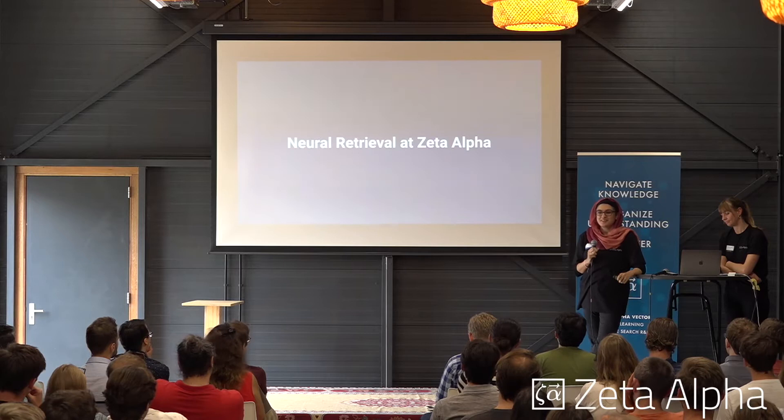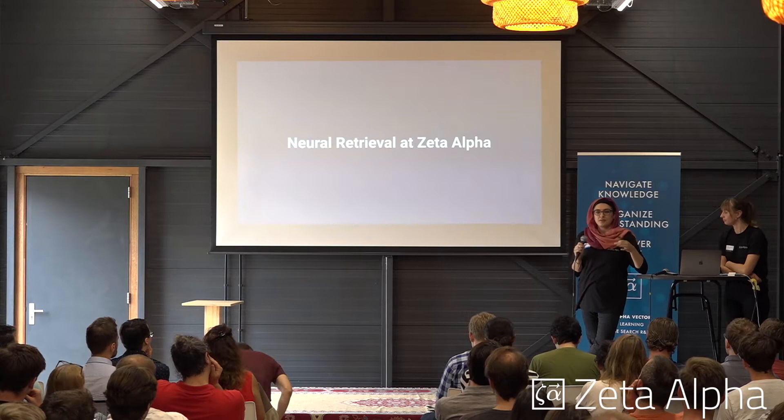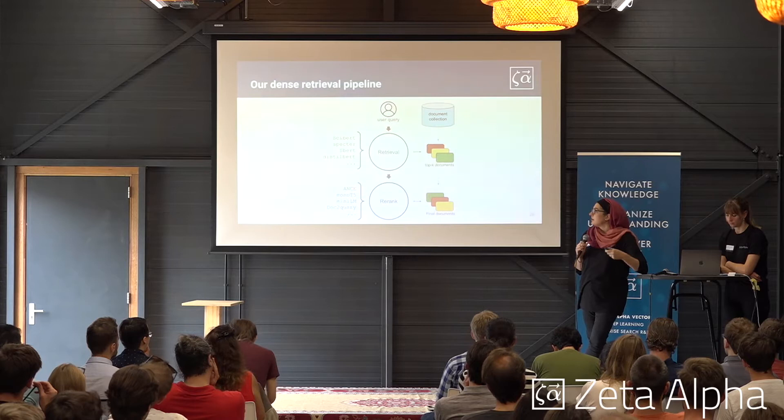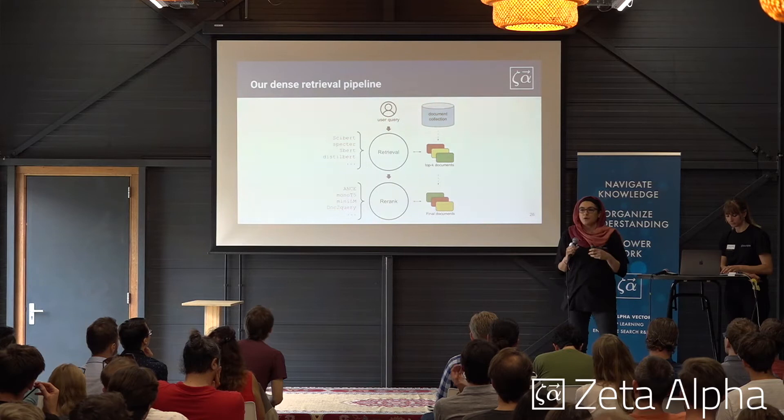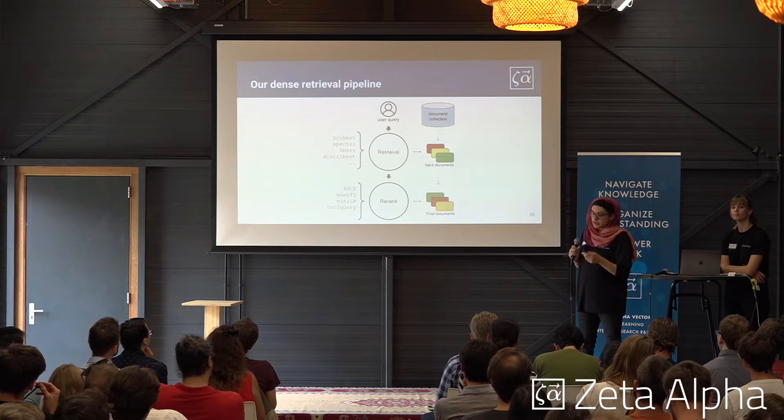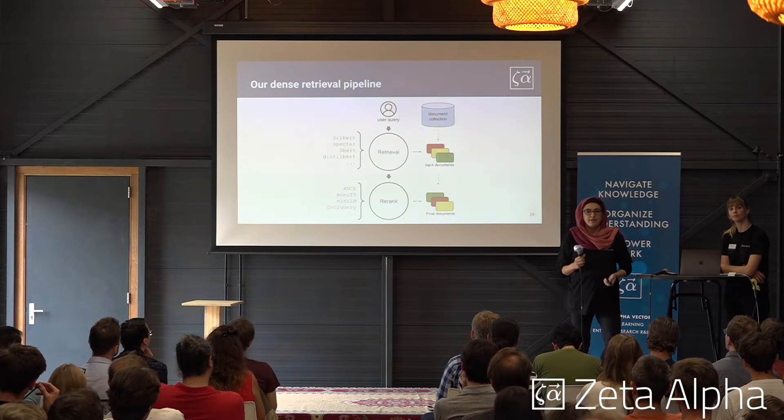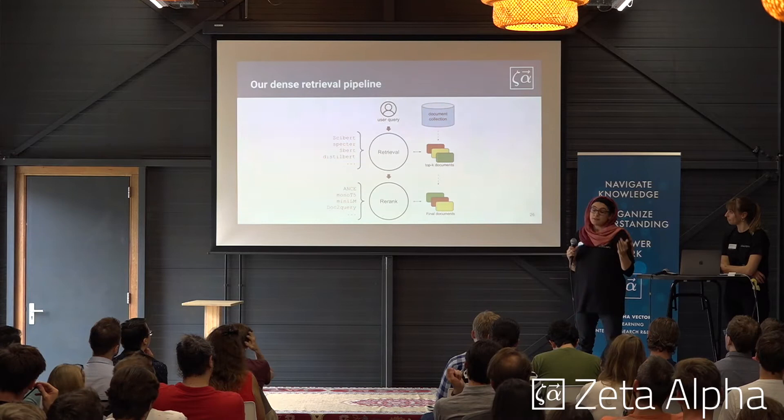Getting back to it — let's talk about neural retrieval at Z-Alpha. We know what dense retrieval means at an abstract level, so what are we doing with it at Z-Alpha? A bird's-eye view of our retrieval system that uses dense models looks something like this. We have this two-stage retrieval: the first one is the retrieval model, and then the second one is a re-ranking model.